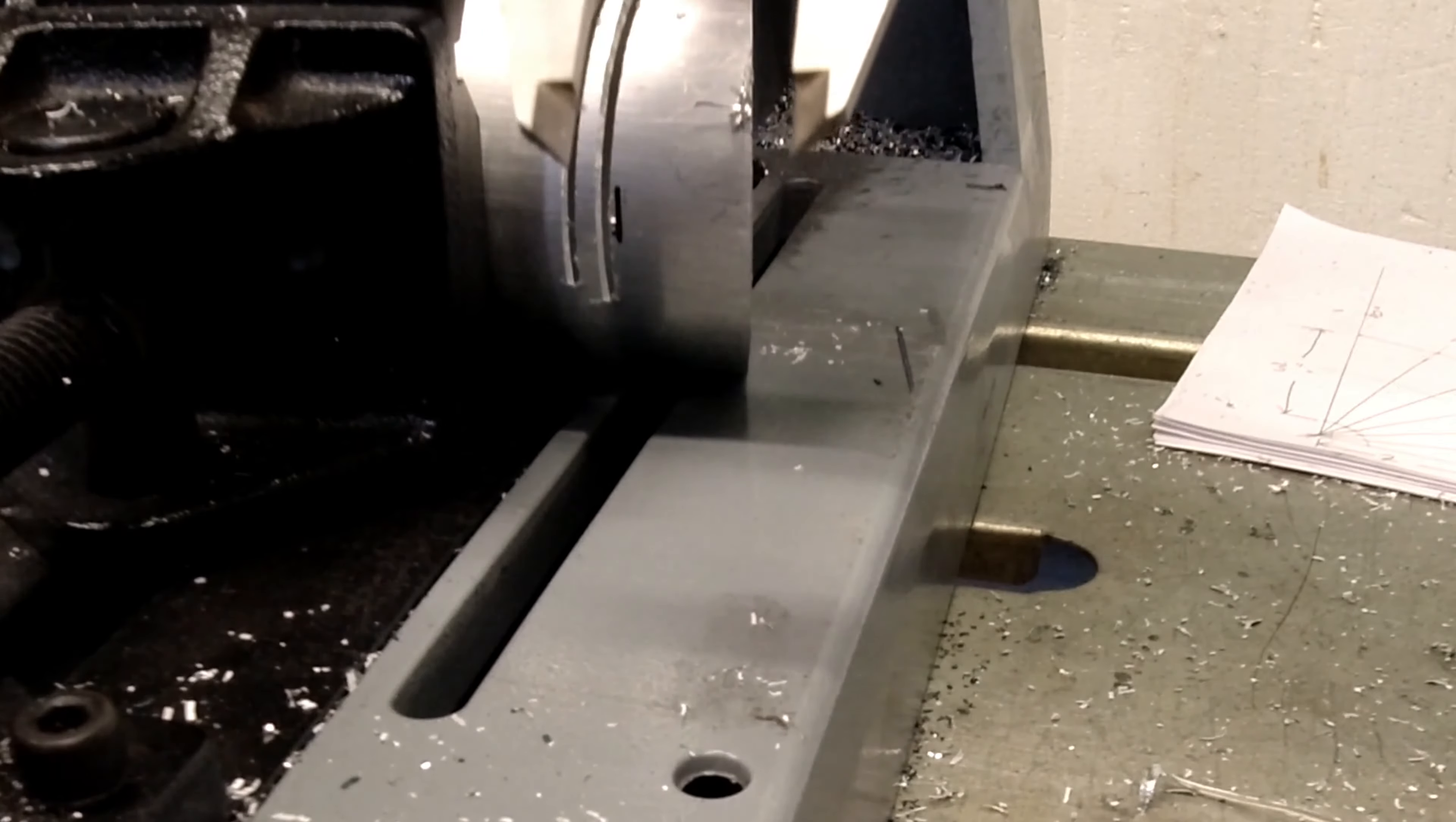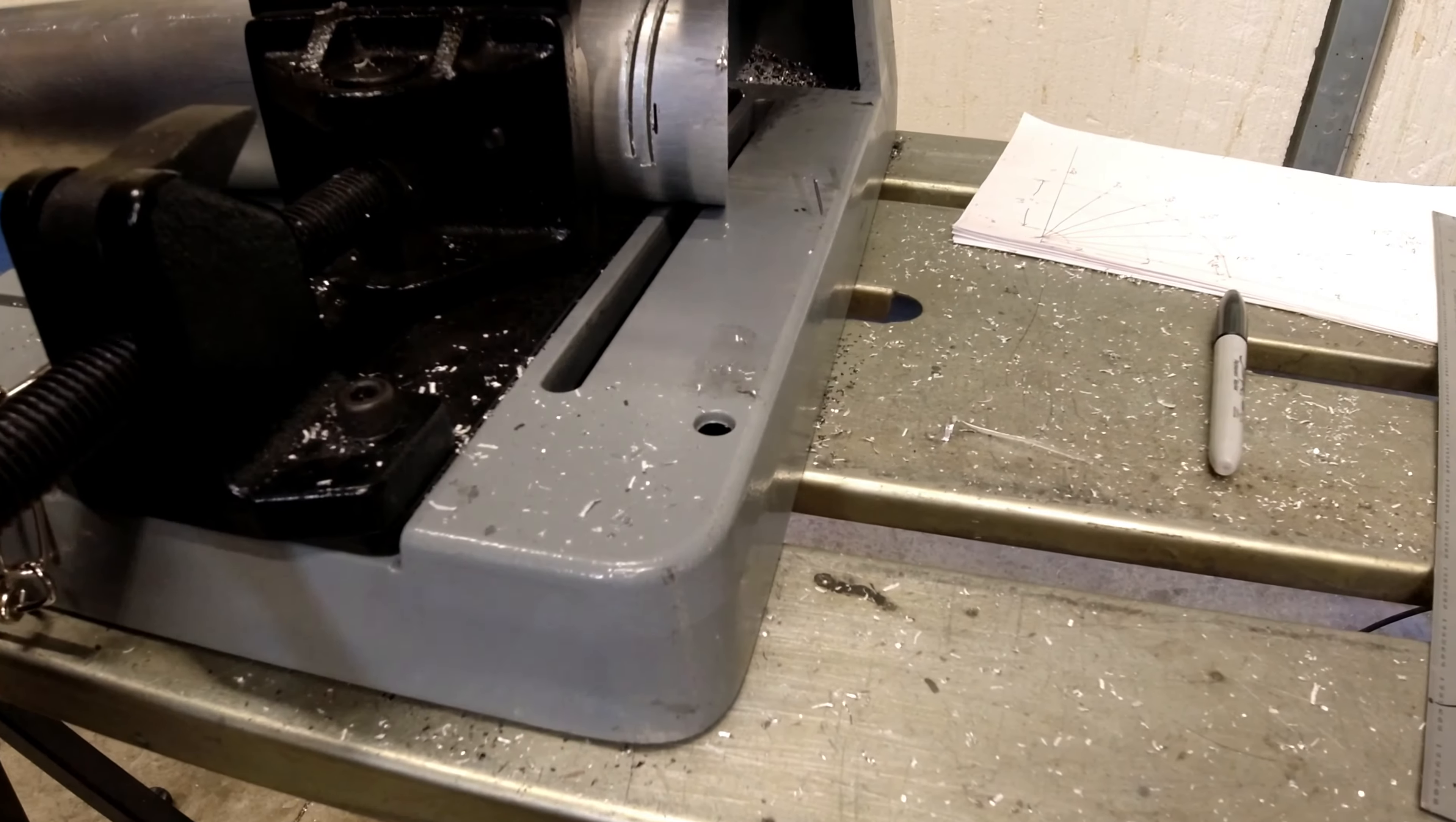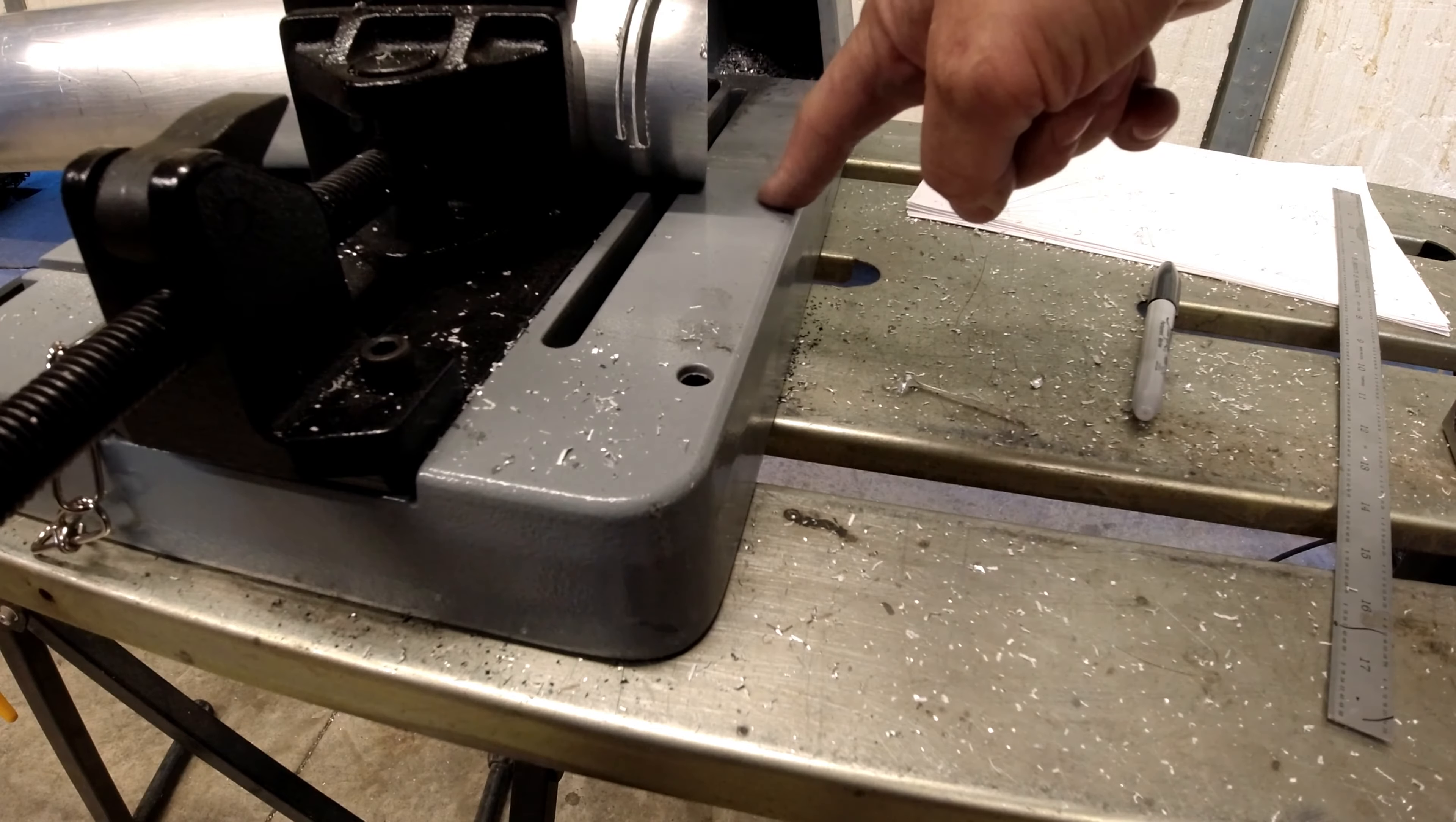And what we can do here is we can always just measure if we want to. So we're about a hundred thousandths off, so we need to move it over just a little bit more. What happens if you don't have these right on? As they stack up, the accumulation of error will get you.